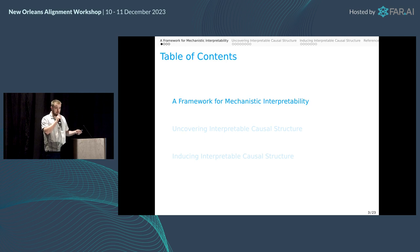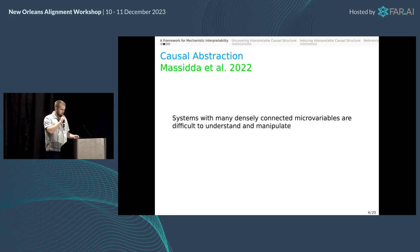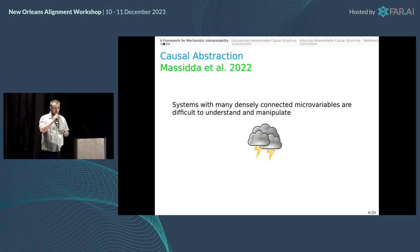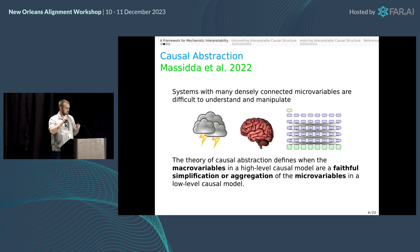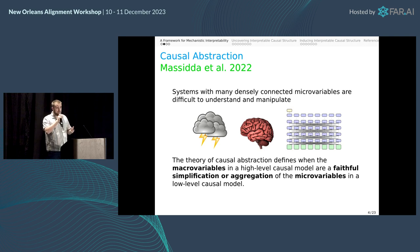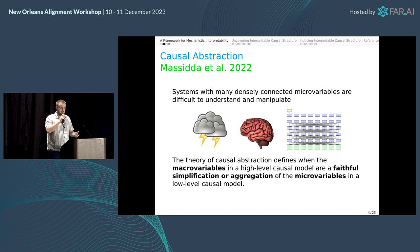First, a framework for thinking about mechanistic interpretability. There are many systems in the world that are densely connected with many different micro variables, making them difficult to understand and manipulate — like the weather, a hurricane, the brain, or an artificial neural network. What unifies these is that understanding them is really the task of faithfully simplifying or aggregating micro variables into macro variables that describe a simple high-level process that faithfully describes the underlying complicated low-level system.